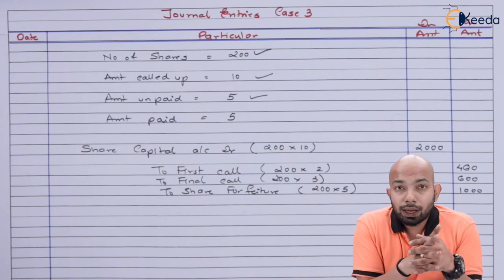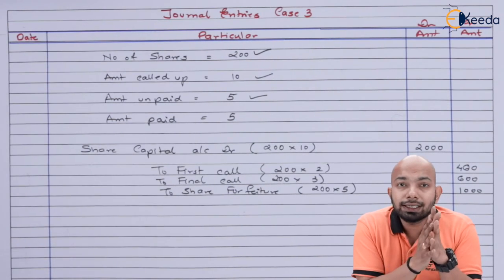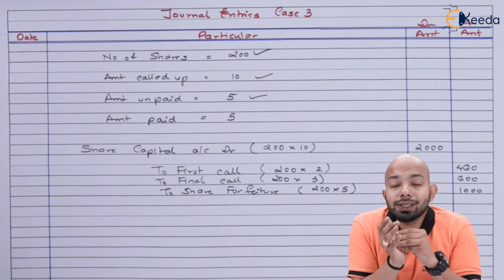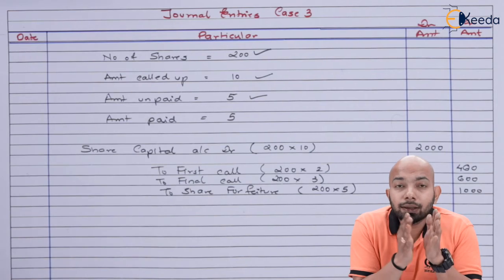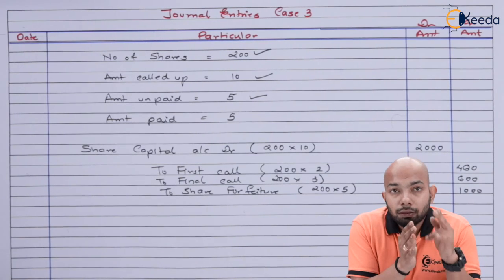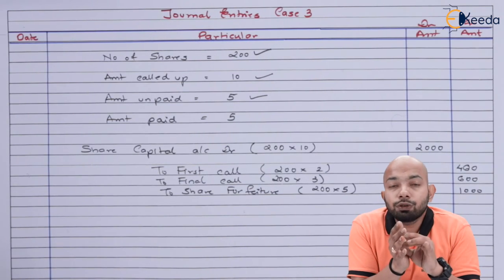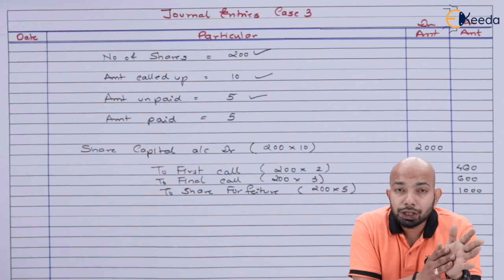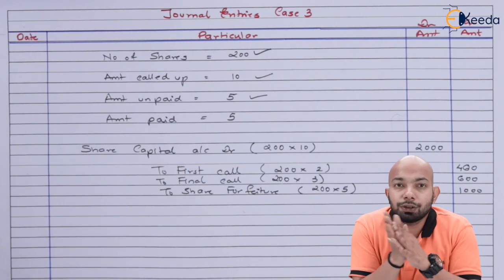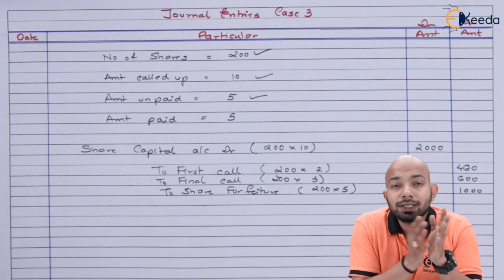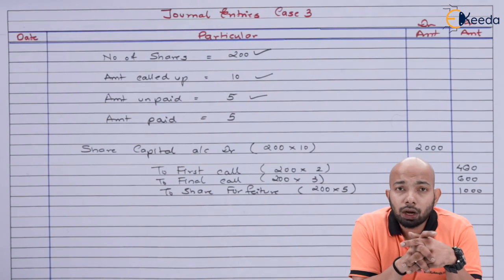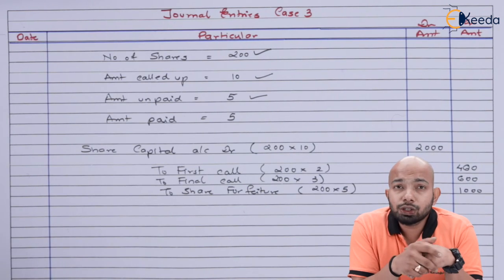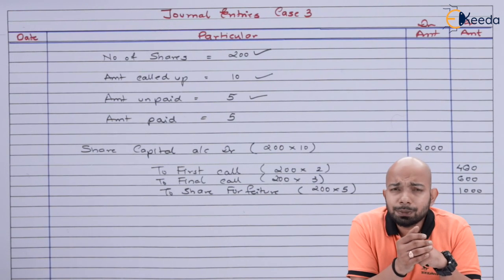The debit side equals the credit side, confirming the share forfeiture entry for Case 3. All forfeiture entries must be prepared correctly, as the share forfeiture balance is used whenever there is a share reissue, after which the remaining balance is transferred to Capital Reserve. This illustration has given clarity on how different situations are handled for share forfeiture entries.